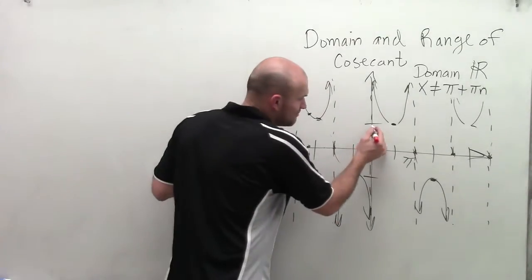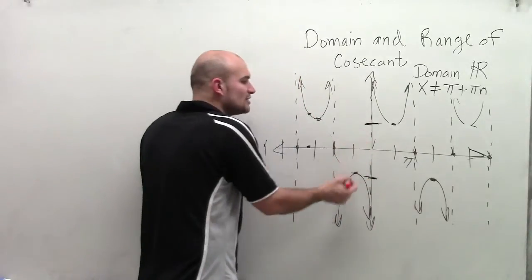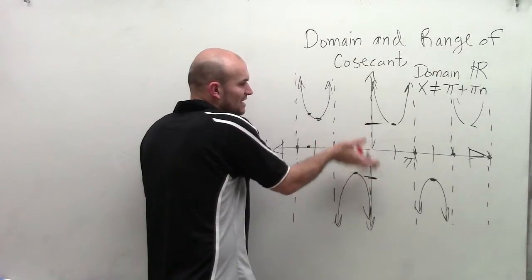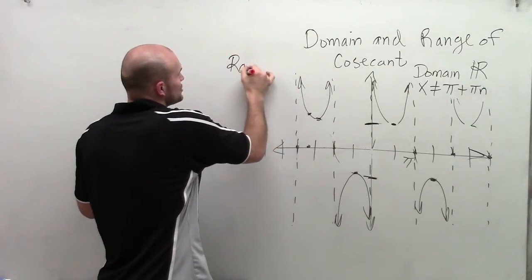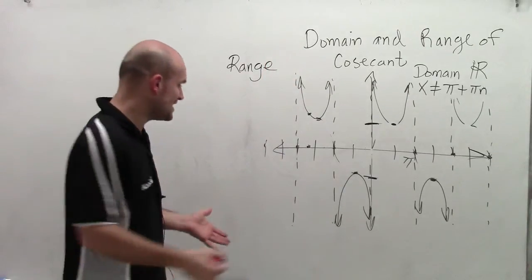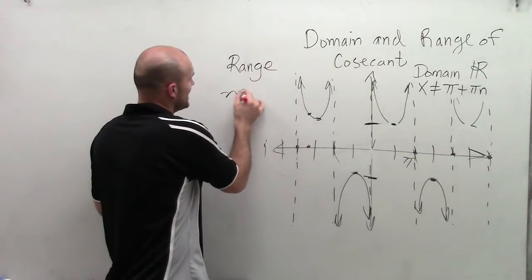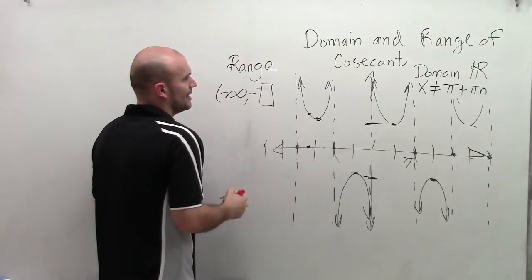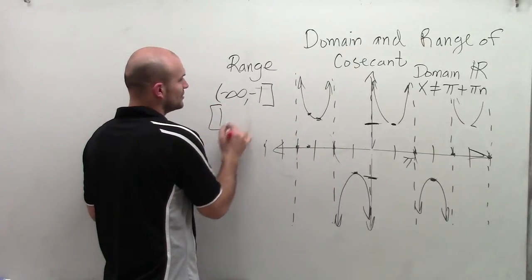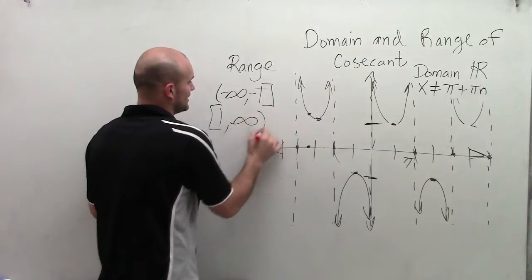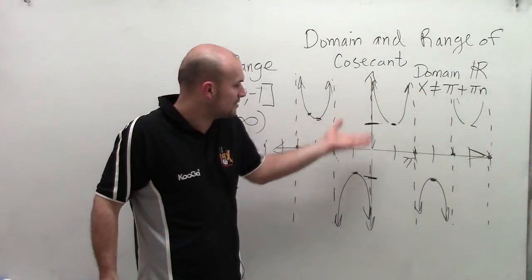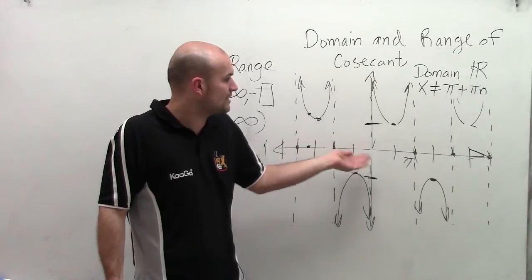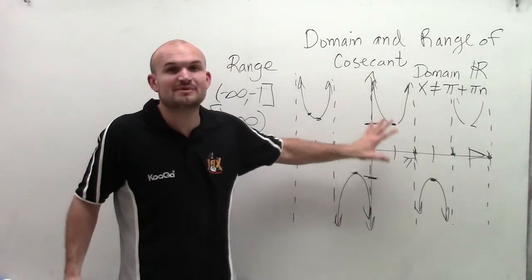And what we're looking at is, yeah, between positive 1 and negative 1, there is no output value for my function, right? There's none of the graph is between negative 1 and 1. So when looking at the range, the range is not going to be all real numbers. The range is contained from negative infinity all the way up to negative 1, and then at 1, it continues all the way up to infinity. So there's kind of like a point between negative 1 and 1 where my graph does not have an output value for the y coordinates. So therefore, it's not going to be included in our range.